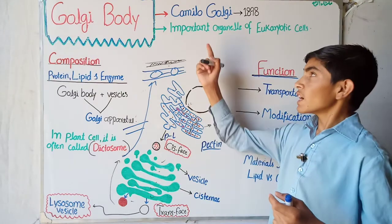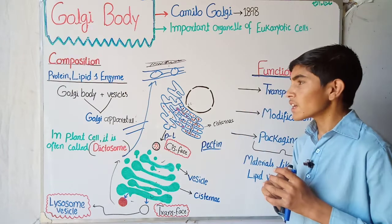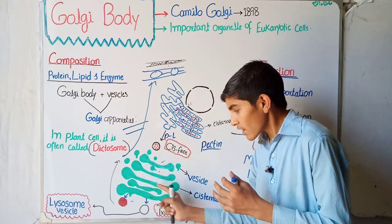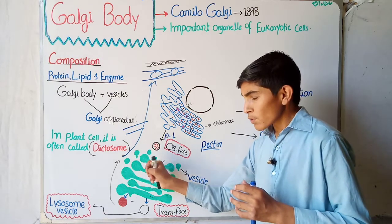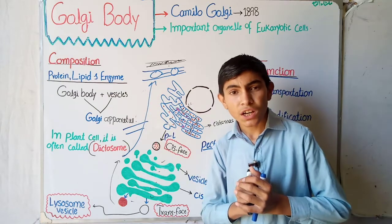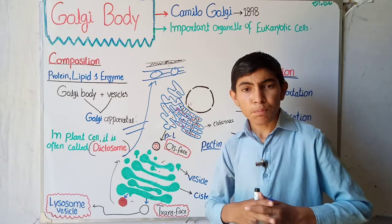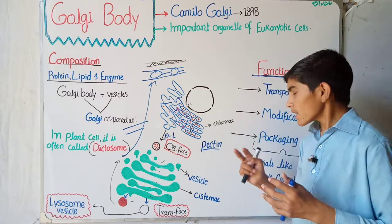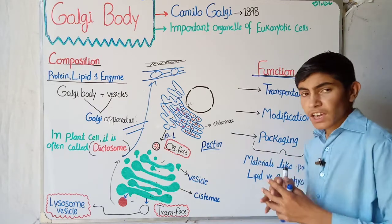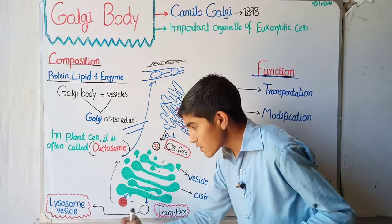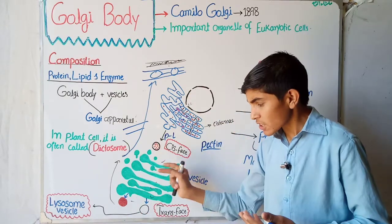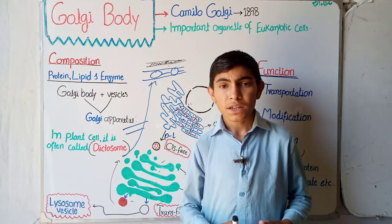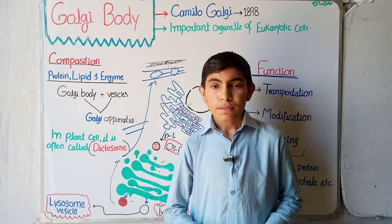Let's revise this lecture. The Golgi body was discovered by Camillo Golgi in 1898. In composition it has protein, lipid, and enzyme. The Golgi body refers only to the flat stacks, but when we include the vesicles, they are collectively called the Golgi apparatus. In plant cells the Golgi apparatus is called the dictosome. The functions of the Golgi apparatus are transportation, modification, packaging of materials, and importantly the multiplication and packaging of lysosomes. I hope this lecture was helpful — please comment any questions, subscribe, and share for upcoming lectures.